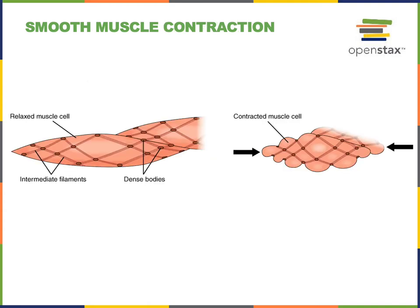Smooth muscles are not striated — they do not have the alternating dark and light bands that we see in skeletal muscle. However, there are still myosin and actin proteins found inside smooth muscle fibers. The actin proteins are anchored to dense bodies, which are attached to the sarcolemma all around the smooth muscle fiber.